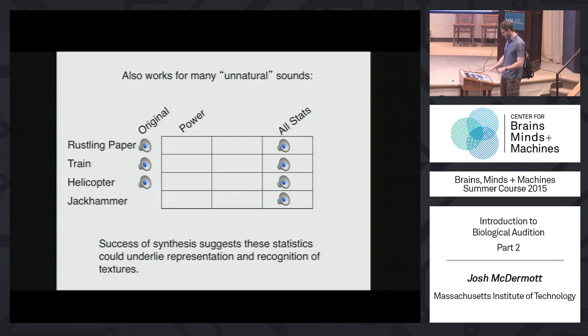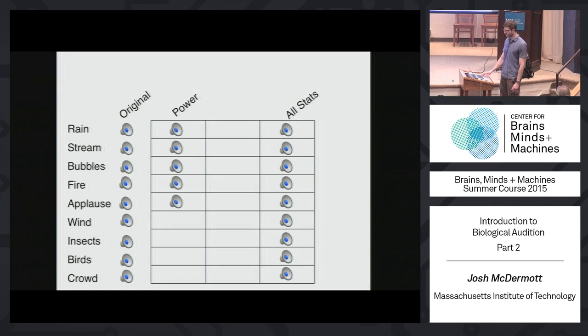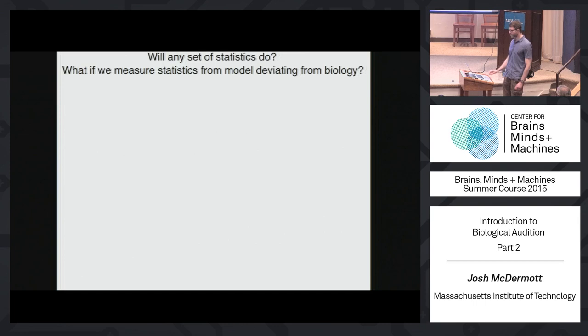One thing that you might be concerned about is that what we've done here is we've imposed a whole bunch of statistical constraints. We're measuring this really large set of statistics from the model and then generating things that have the same values of those statistics. So there's a question of whether any set of statistics will do.